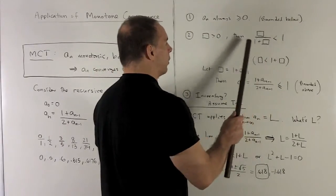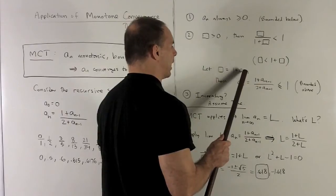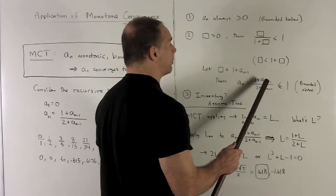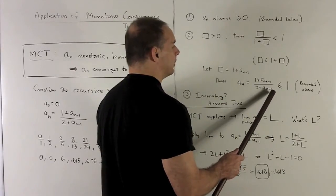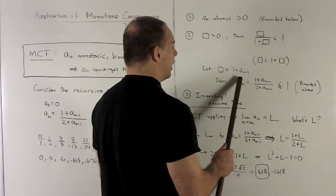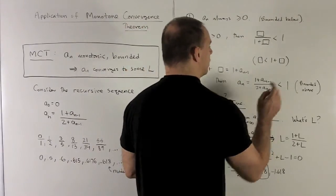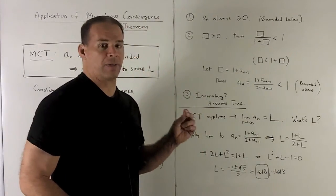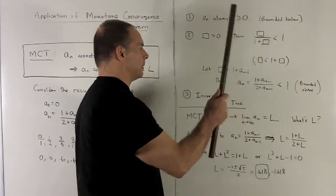So what we're going to do here now is where I have box, I'm going to stick in 1 plus a_(n-1). When I do that, I get 1 plus a_(n-1) on top, and the bottom will have 2 plus a_(n-1). That's my a_n. And note, we're assuming right here that this thing is always less than 1. So 1 is going to be a bound from above for a_n, just by this little bit of gymnastics.